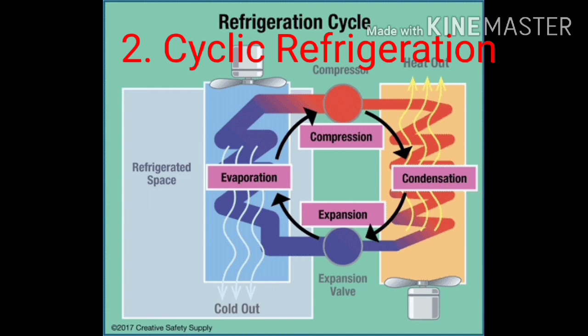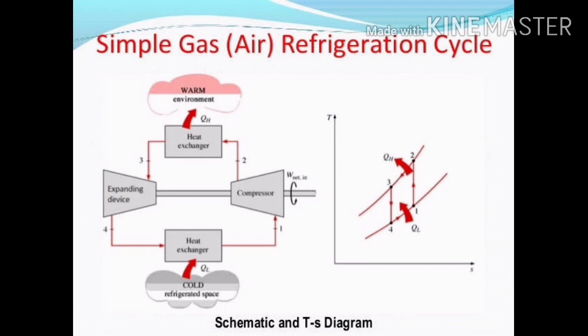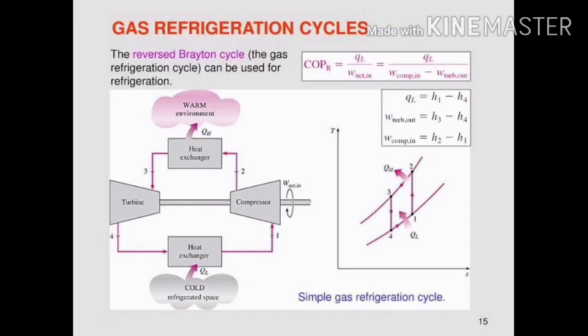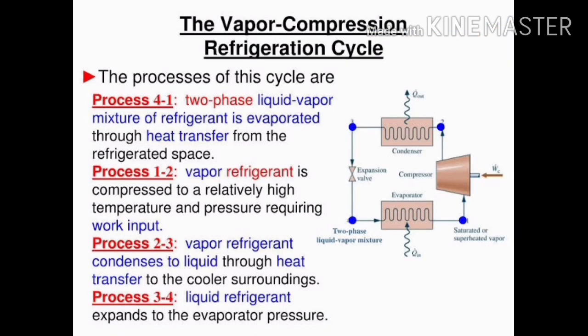The second is cyclic refrigeration. This consists of a refrigeration cycle where heat is removed from a low temperature space or source and rejected to a high temperature sink with the help of external work. The operating principle of the refrigeration cycle was described mathematically by Sadi Carnot in 1824 as a heat engine. The most common types of refrigeration systems use the reverse Rankine vapor compression refrigeration cycle, although absorption heat pumps are used in a minority of applications.